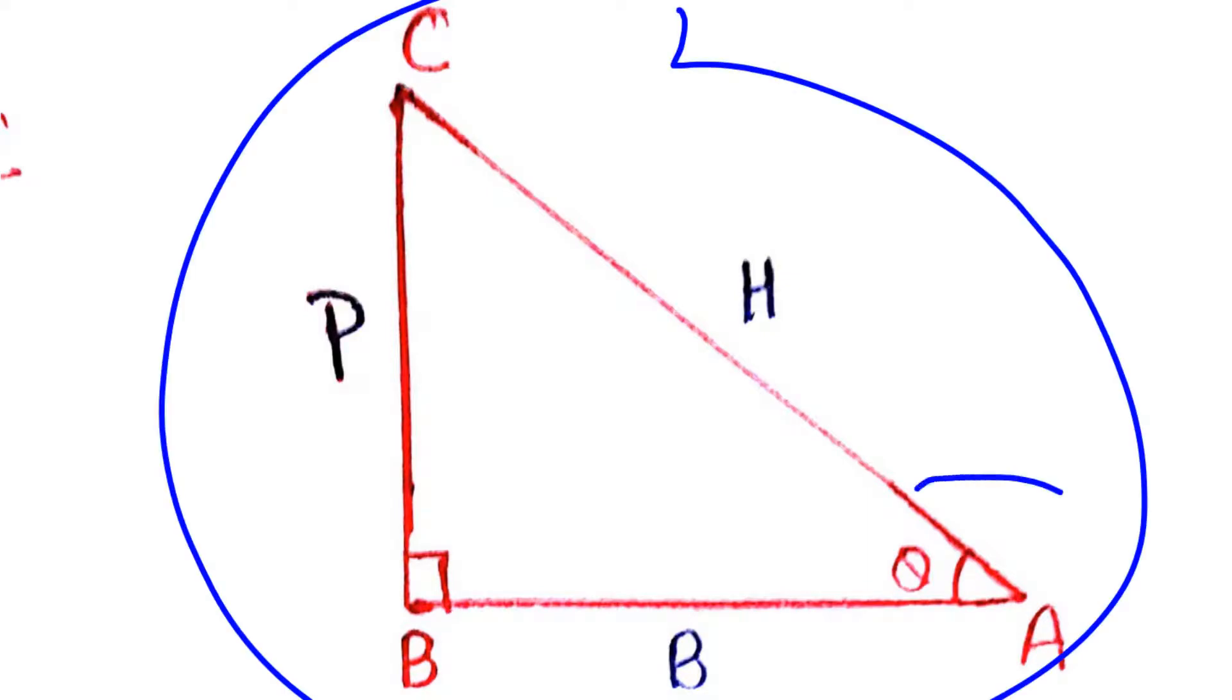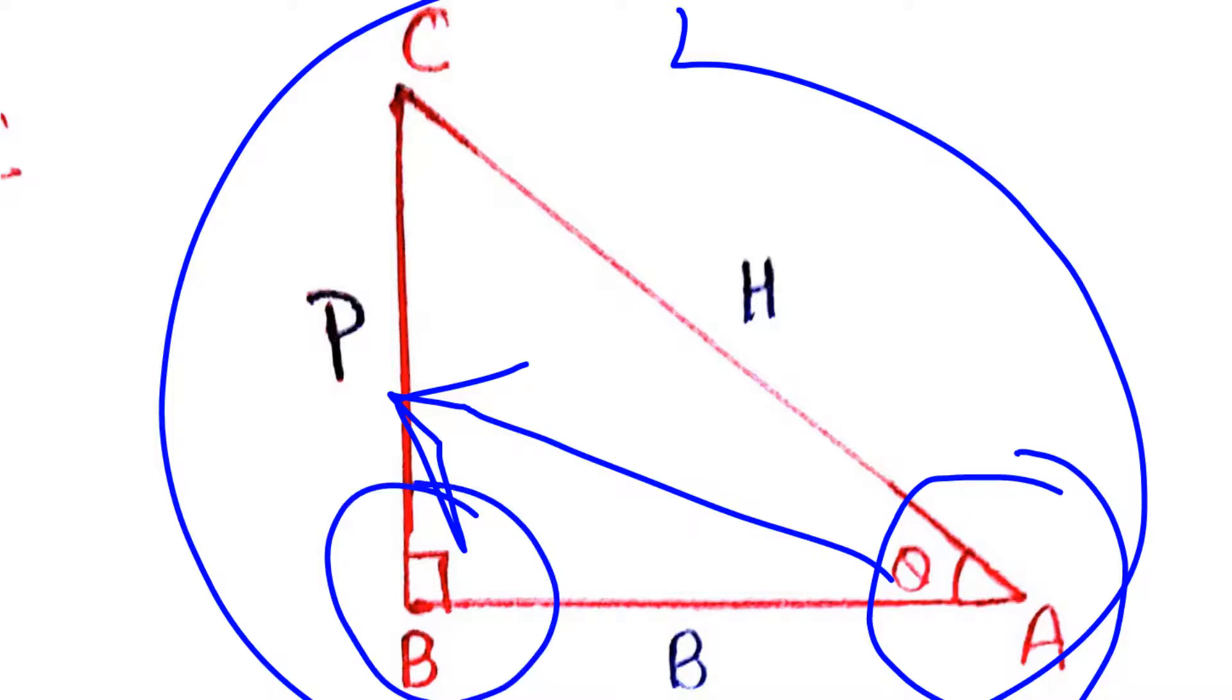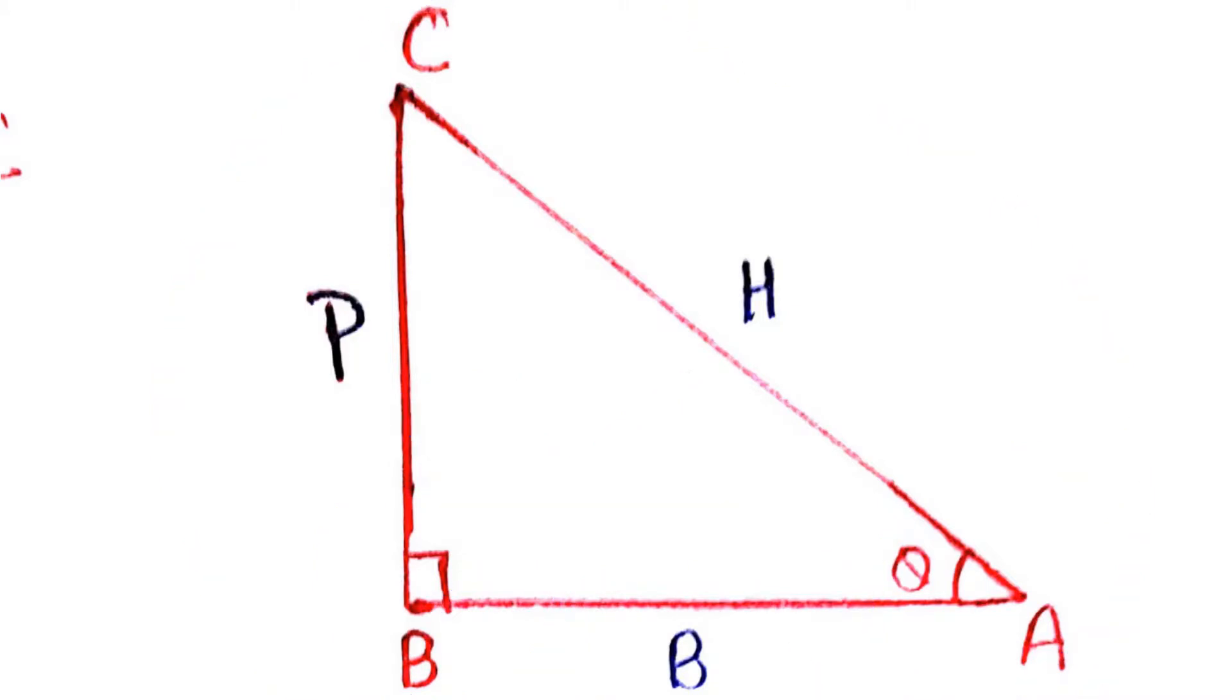We have sec θ, so this is our main angle θ. For the opposite side we have P (perpendicular), for the right angle we have hypotenuse H, and the other side we have base B. We draw a right-angled triangle ABC where angle B is the right angle.